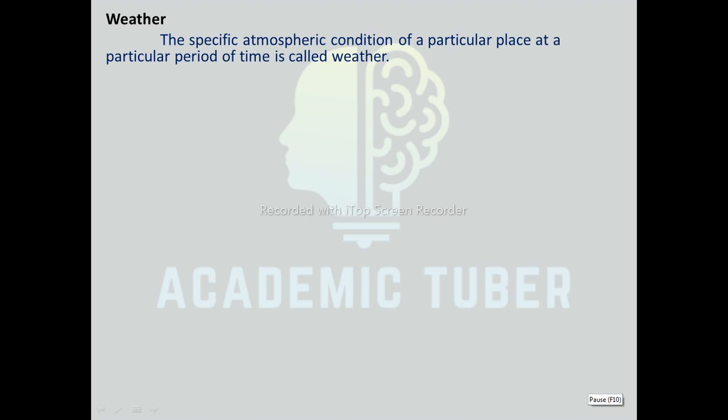Weather. The specific climatic condition of a particular place at a particular period of time is called weather. It is the sum of all processes occurring in a particular area at a particular time. Weather refers to day-to-day temperature, rainfall, humidity, sunshine, etc. Weather occurs due to difference in temperature and moisture of different places. Weather includes wind, clouds, rain, snow, frost, etc.